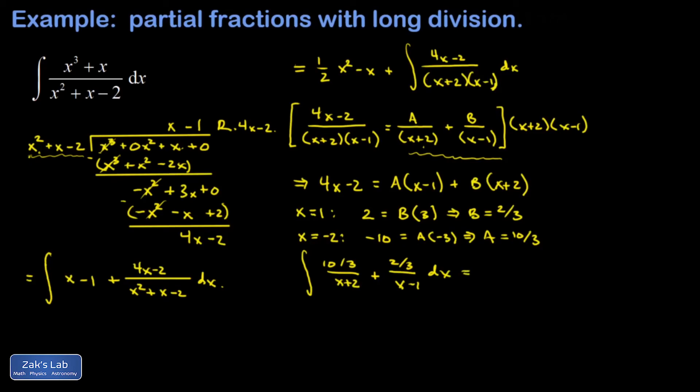And each of these pieces is guessable. It's just a natural log of the absolute value of the denominator. So I have 10 thirds natural log absolute value x plus 2 plus 2 thirds natural log absolute value x minus 1.